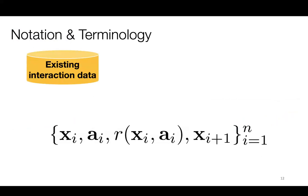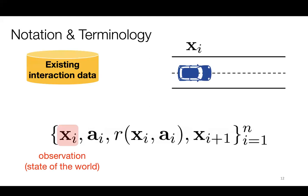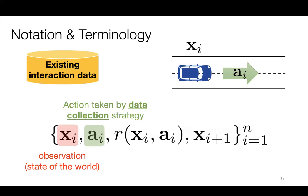Let me quickly go through notation. The main thing to think about is the existing source of interaction data, which consists of tuples of four elements. We use x_i to denote the state or observation visible to the algorithm — for example, when data comes from human drivers, this could be the position and parameters of a car at a particular instant in time. I'm making a strong assumption that this is a full state for now, though I'm happy to discuss the partial observability case later.